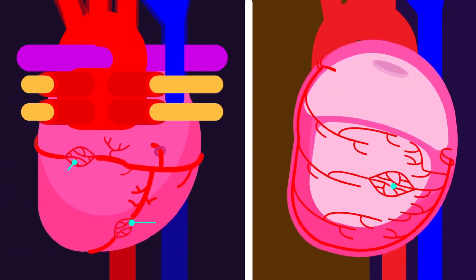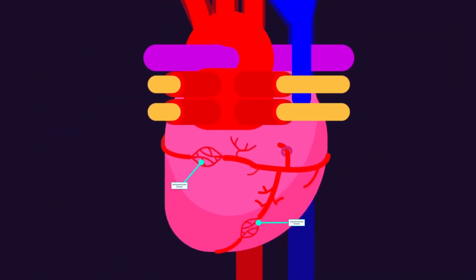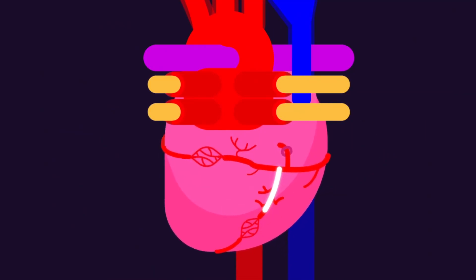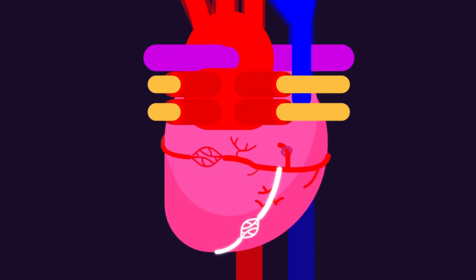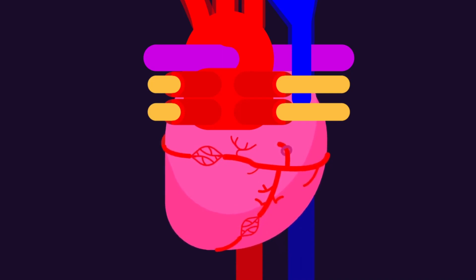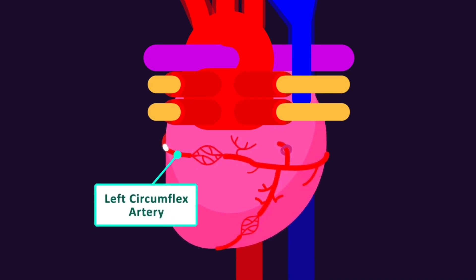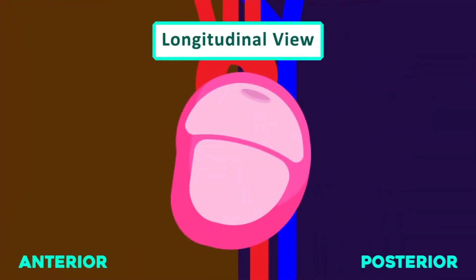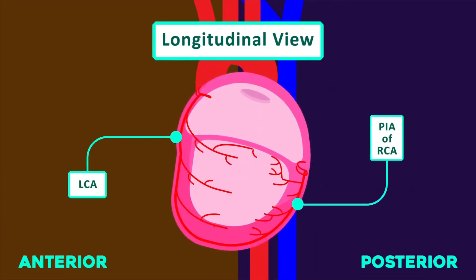Most commonly, three areas of anastomosis are seen in the heart. The branches of the posterior interventricular branch of the right coronary combine with the left anterior descending branch of the left coronary in the interventricular groove or sulcus. A bigger anastomosis is between the left circumflex artery, a branch of the left coronary artery, and the right coronary artery in the atrioventricular groove. Another anastomosis is seen between the septal branches of the two coronary arteries in the interventricular septum.